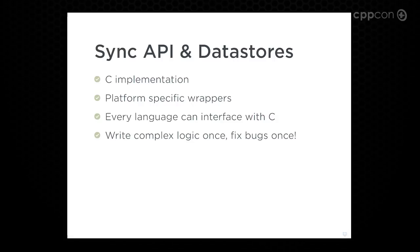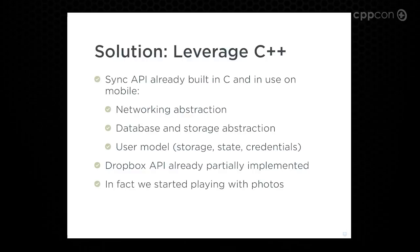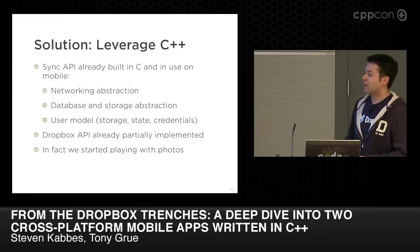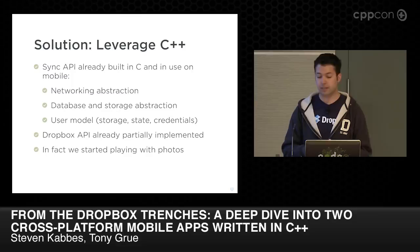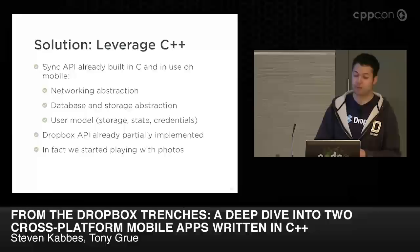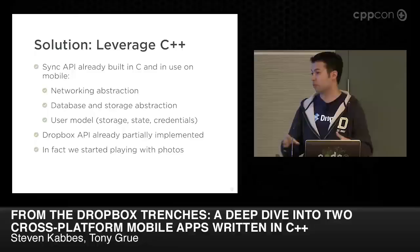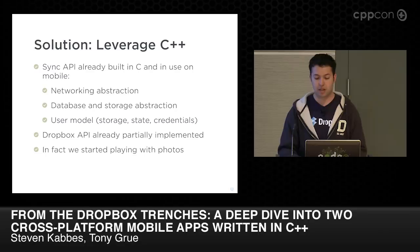In fact, we were even talking about compiling this into JavaScript. So we have this Sync implementation. One thing is we actually built this in C and got our feet wet before jumping into C++. We started with C because every language can interface with C, but we later regretted that mistake. So when we came to build the Carousel app and rebuild Mailbox for Android and V2 on iOS, we decided not just to learn from the Sync API but to leverage it internally. This gave us a networking abstraction in C++, database and storage abstractions, a user model, some API already implemented, and we'd even started playing with photos. We knew this was not going to be a super risky decision.